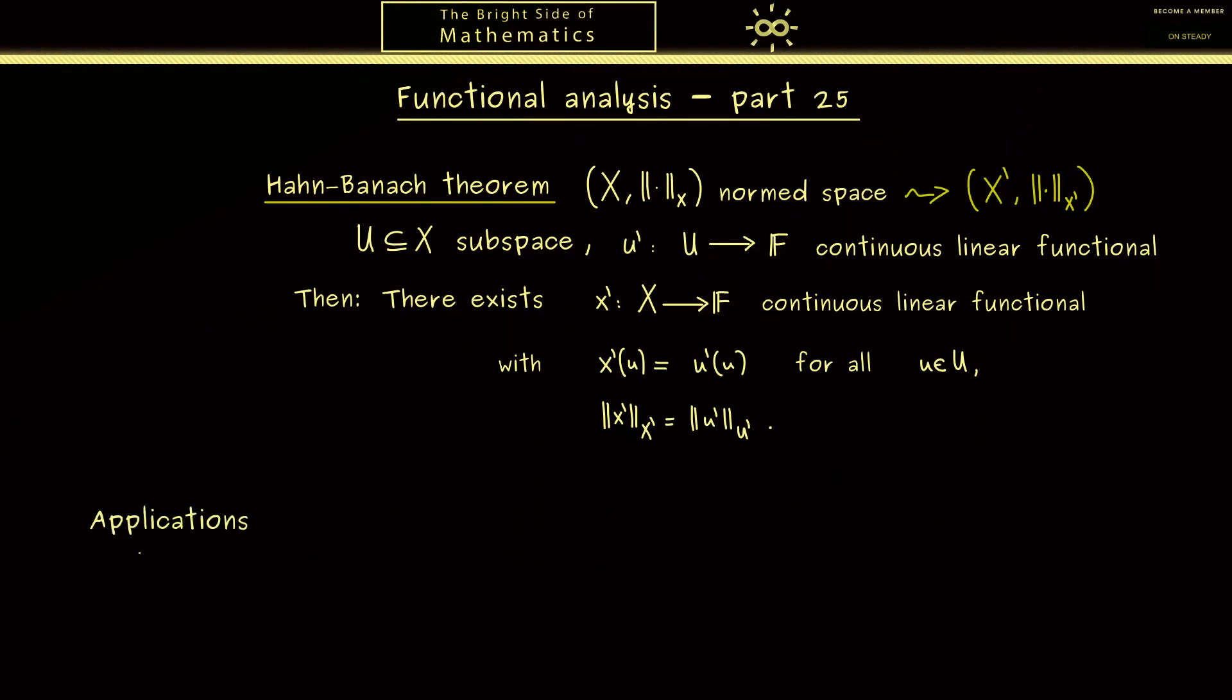Okay, now I want to show you how this nice theorem is often applied. Therefore, let X again be a normed space and the first thing I can tell you is that we find for all points in X a special functional. The only point I want to exclude is the zero vector. Now the continuous linear functional x' should have norm 1 and should also send the point x itself to the norm of x.